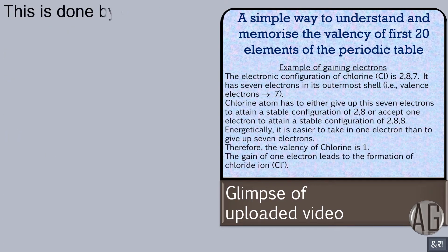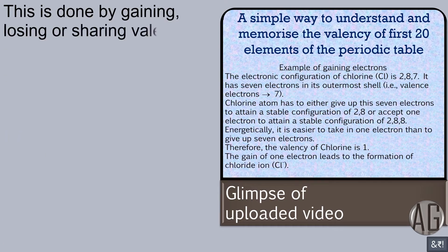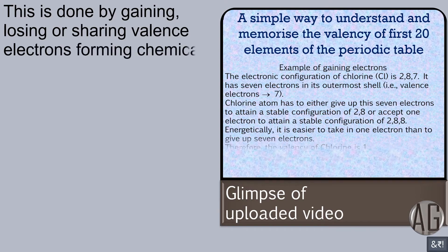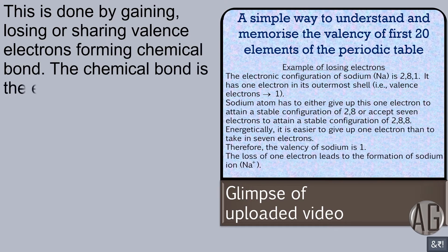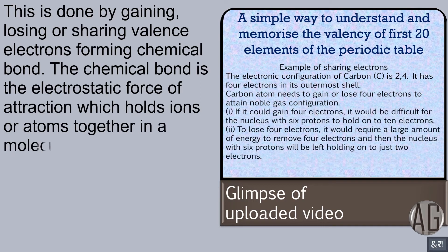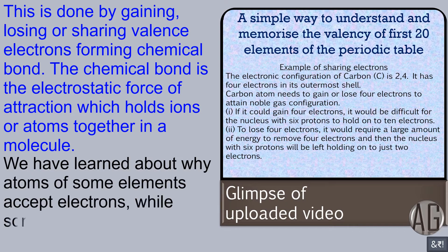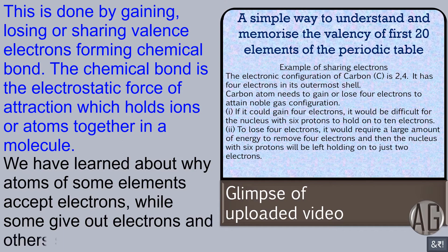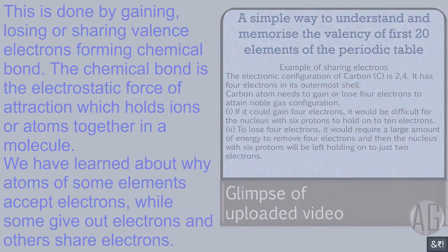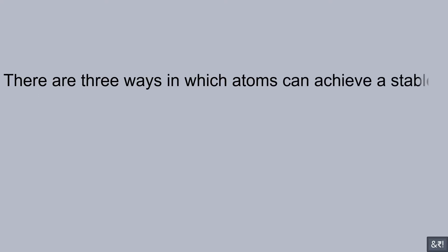This is done by gaining, losing, or sharing valence electrons, forming a chemical bond. The chemical bond is the electrostatic force of attraction which holds ions or atoms together in a molecule. There are three ways in which atoms can achieve a stable configuration — what we call types of chemical bonds.